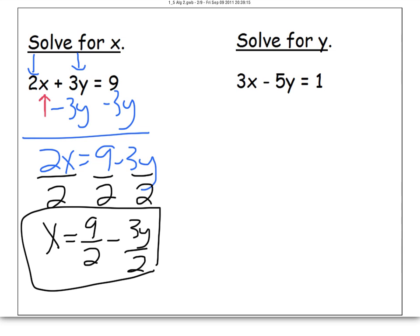The second one wants to get y by itself, which means we have to move the 3x and the negative 5. The negative 5 is the closest to the y, the 3x is the furthest out. That's what gets moved first. This is a positive 3x, so to move a positive 3x, you're going to have to subtract the 3x from both sides. So we have a negative 5y. Don't lose the negative here in front of the y. Equals 1 minus 3x.